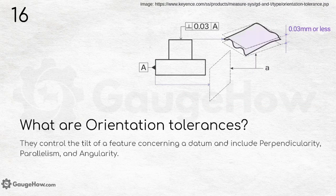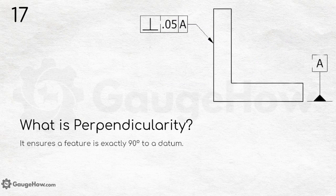What are orientation tolerances? Remember, orientation tolerances always depend on the orientation of a certain object — they control the tilt of a feature concerning a datum and include perpendicularity, parallelism, and angularity. What is perpendicularity? It ensures a feature is exactly 90 degrees to a datum. The symbol is easy to remember as it represents 90 degrees to the datum.